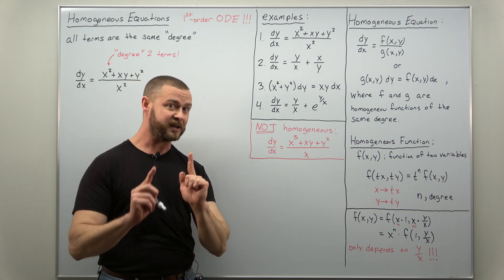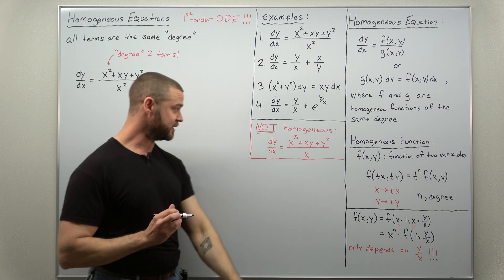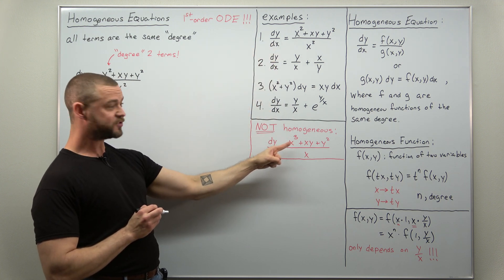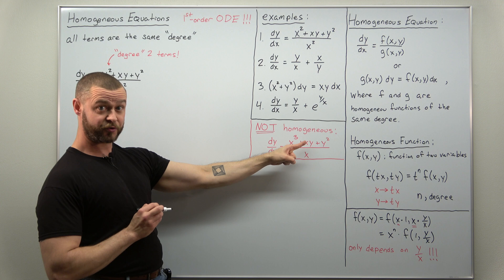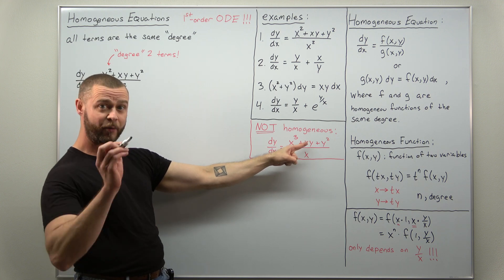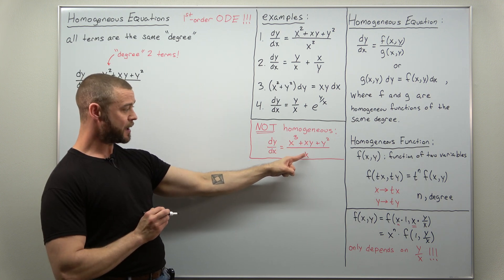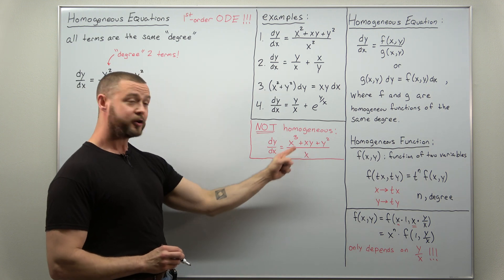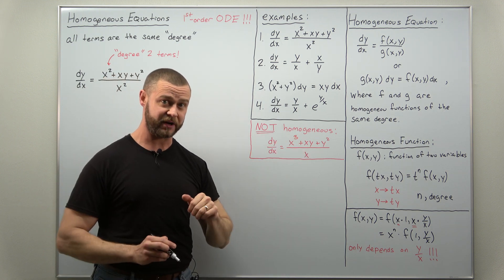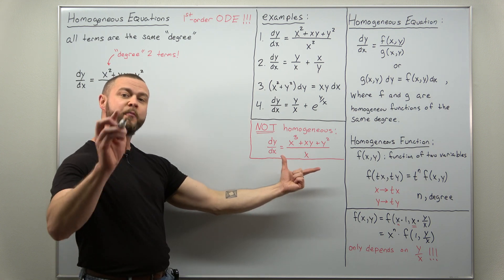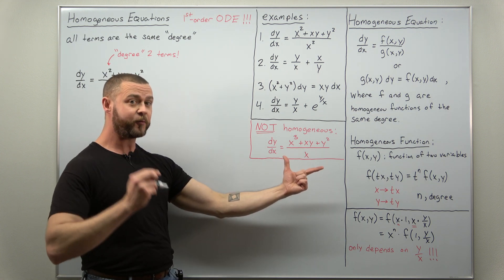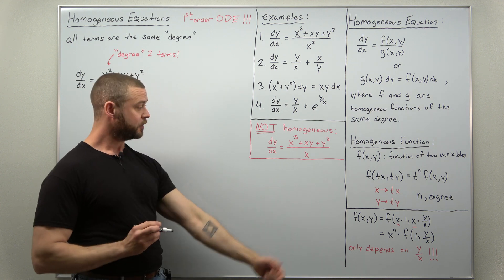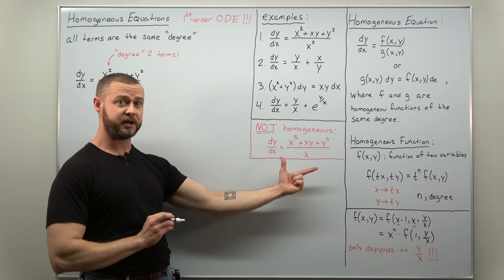It's worth pointing out an example that is not homogeneous. Very similar to example one, but notice now we have an x cubed — degree three — term; xy, which is degree two; and in the denominator x to the one, degree one. Here your terms have different degrees, so this one, right from your intuitive or informal definition, is not homogeneous. The terms are of different degrees.